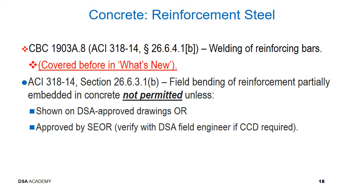CBC Section 1903A.8, Modified ACI 318-14 Section 26.6.4.1B: Welding of Reinforcing Bars. This section was covered before in the What's New section of this concrete presentation. Section 1903A.8 is for fusion welding of reinforcing bars. Longitudinal holding wires are required. Ties to be welded to the holding wires must be ASTM A706, and welding of ties to main reinforcing is prohibited.